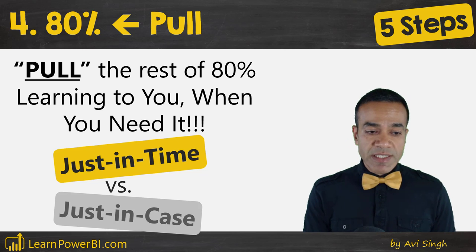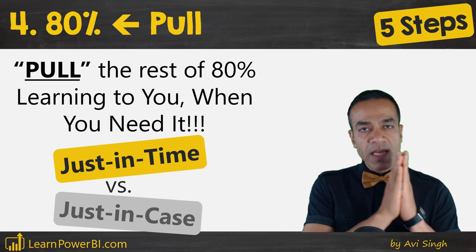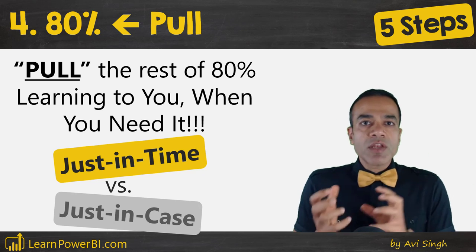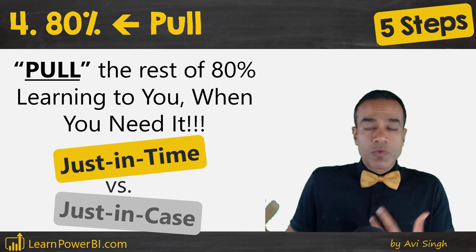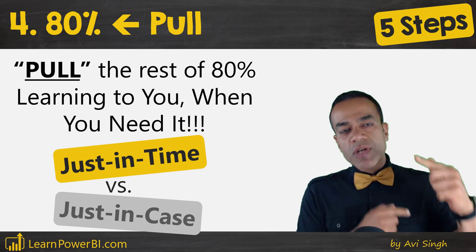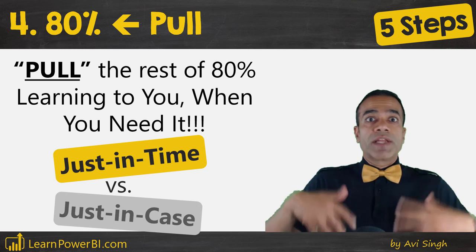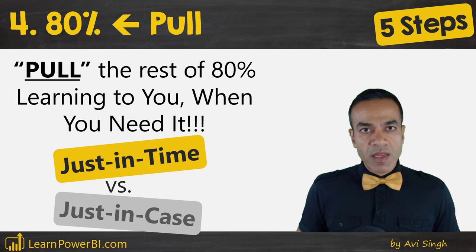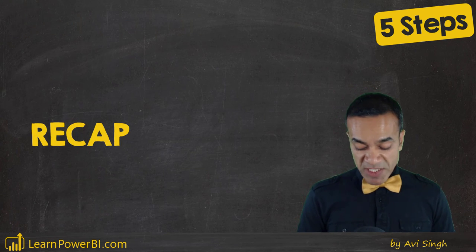Let's talk about just-in-time versus just-in-case. For the pull approach to work, as and when you need something — like maybe a function you've never used before — it's okay to Google that and YouTube that. You can pull it to yourself, as opposed to getting caught in that learning paradox where you're trying to learn everything just in case you need it. Relax a little bit and know that you can pull the 80% to you when you need it, piecemeal.